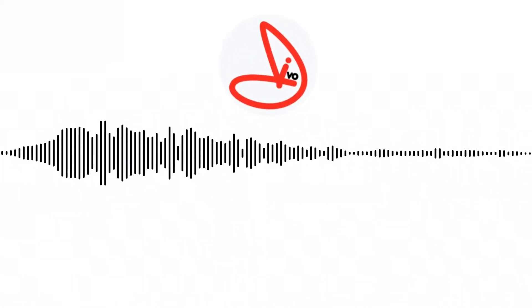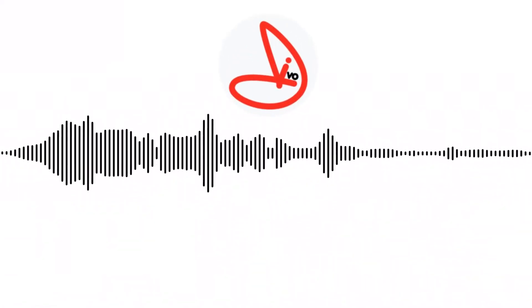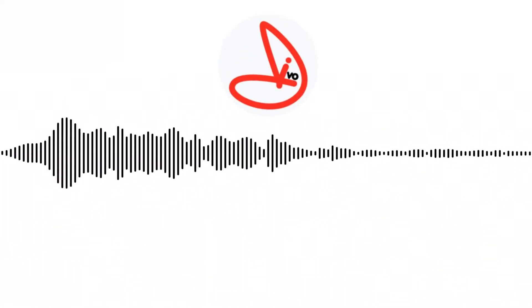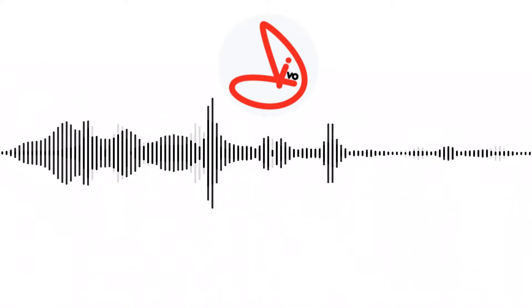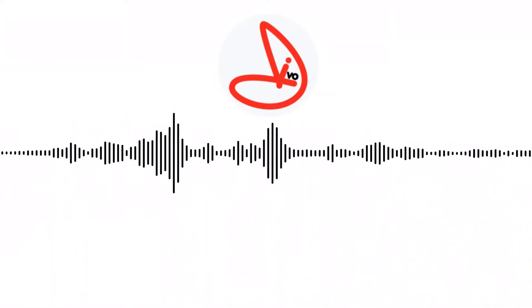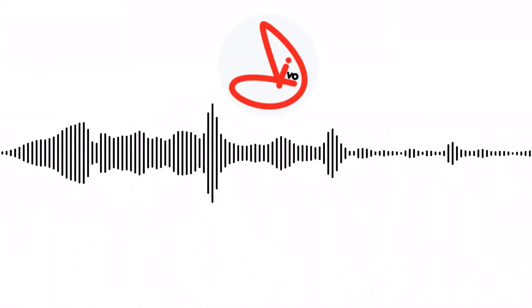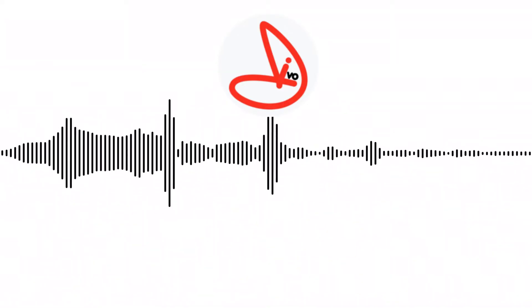Generally, when moved left or right, the cyclic stick causes the helicopter to tilt sideways. This sideways tilt is called roll.